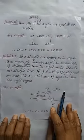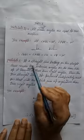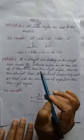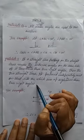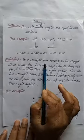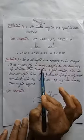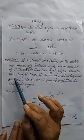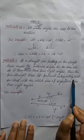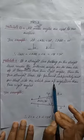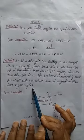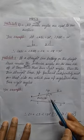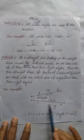Now postulate number 5. This is a big statement but it is very easy, so don't be confused. First of all I am reading the statement, then I will explain with the help of an example. If a straight line falling on two straight lines makes the interior angles on the same side of it taken together less than two right angles, then the two straight lines, if produced indefinitely, meet on that side on which the sum of the angles is less than two right angles. So PQ is a straight line, and here AB and CD are also two straight lines.